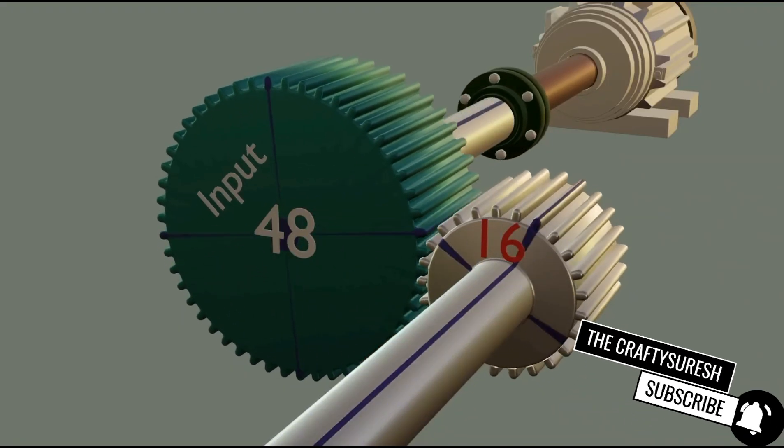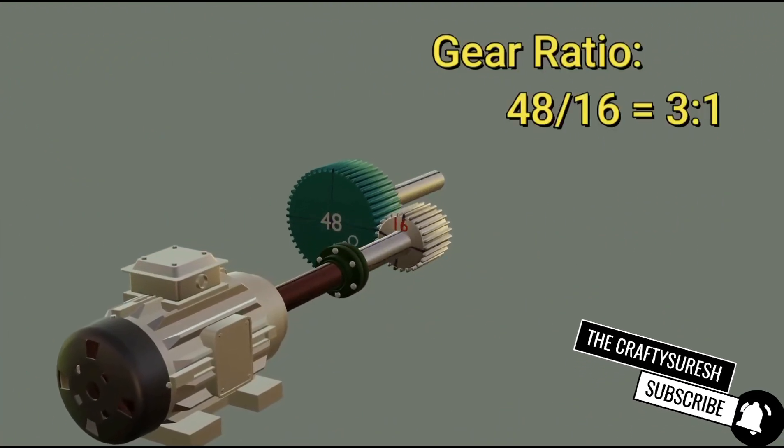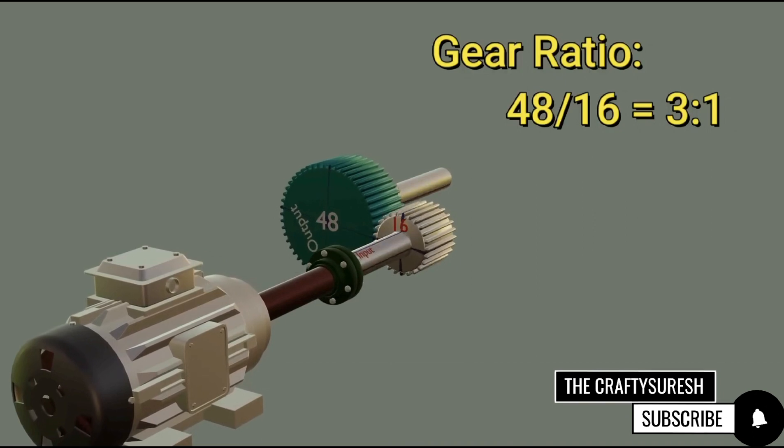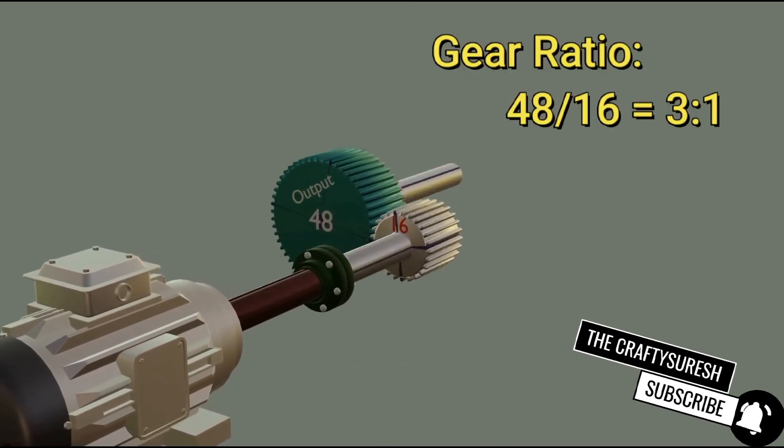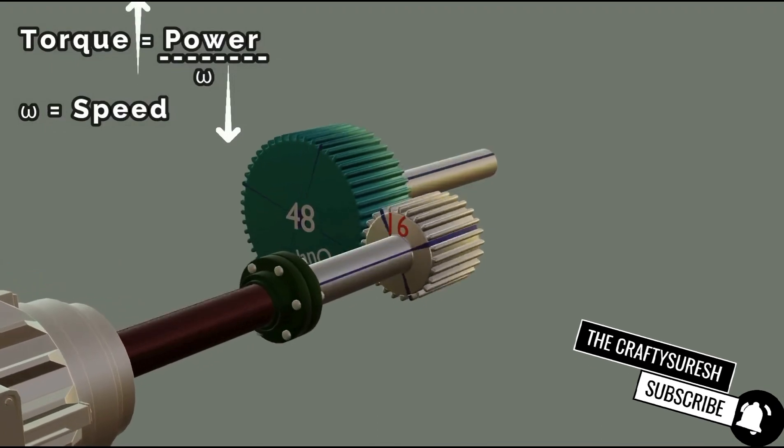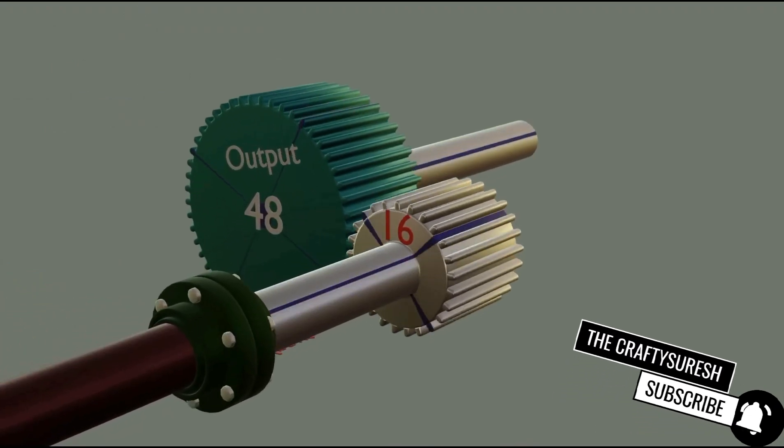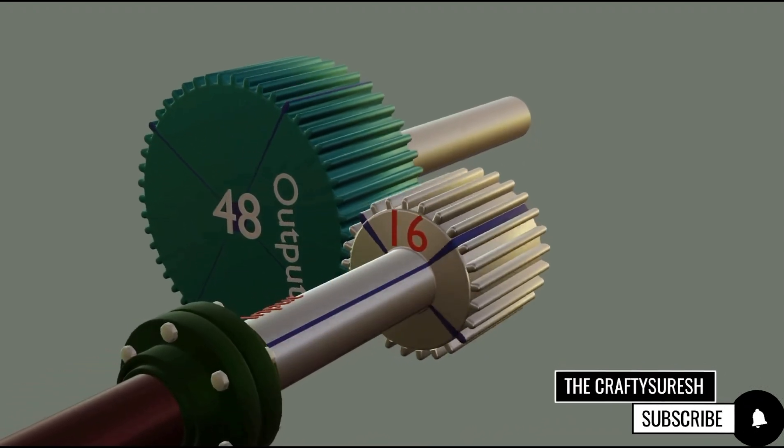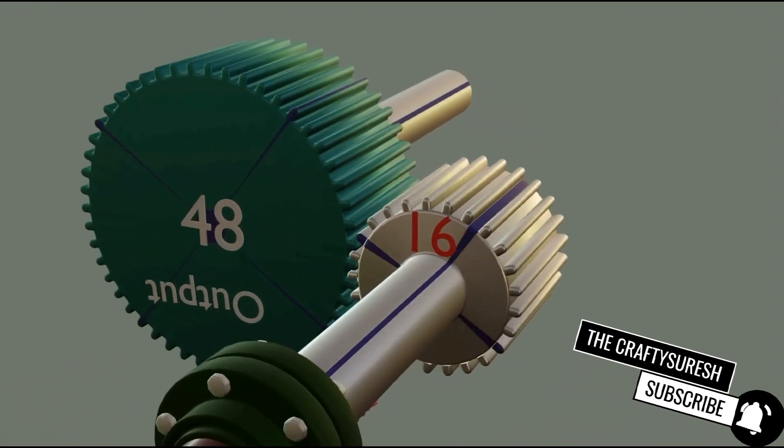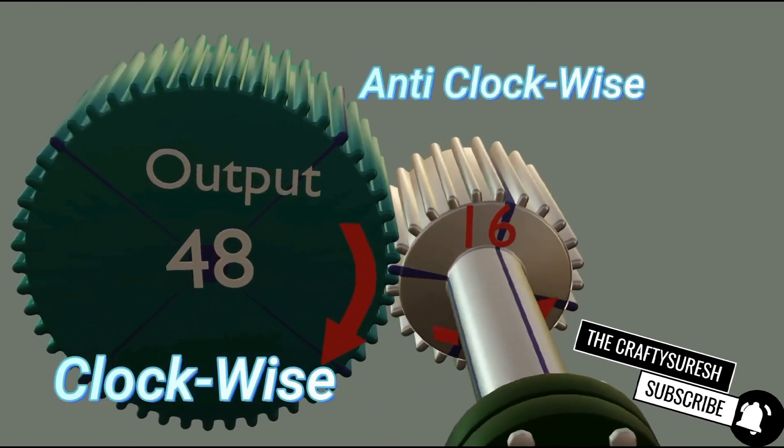If we reverse this and give power to the small gear, then when the small gear rotates 3 times, then the big gear will rotate once. That means the speed is decreasing in the output. So here the torque will increase. So if heavy loading is required, then we have to set the gear ratio like this. We get one more big advantage that we can change the rotation. This gear is rotating clockwise and the other one is anti-clockwise.